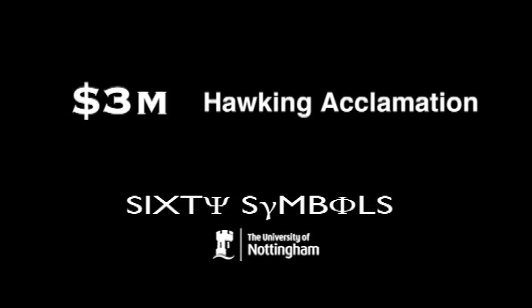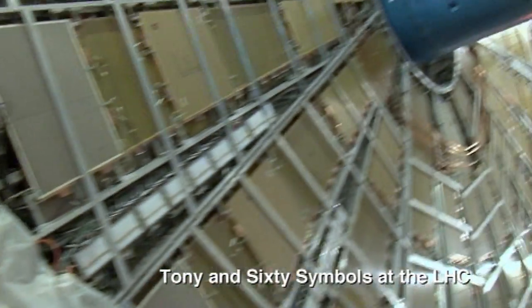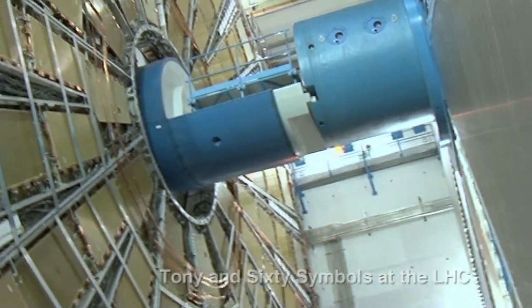They've announced two special prizes today, one to Stephen Hawking and the other to seven CERN physicists. There's a committee that basically decides who's going to get the prize for the subsequent year and that's made up of previous prize winners.